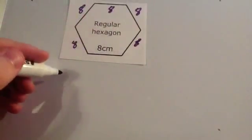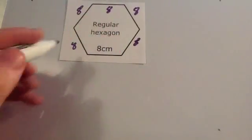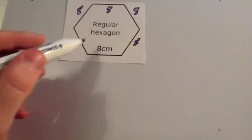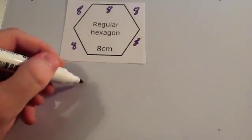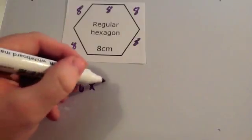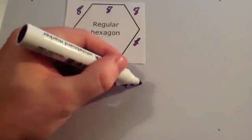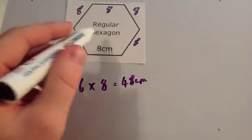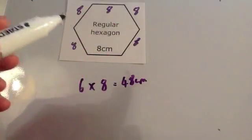So what you could do is you could do eight plus eight plus eight plus eight plus eight plus eight — six eights. Or, because it's got six sides and each of them is eight centimetres, I'm going to do six multiplied by eight. Six times eight is forty-eight centimetres. So the perimeter of this shape is forty-eight centimetres.